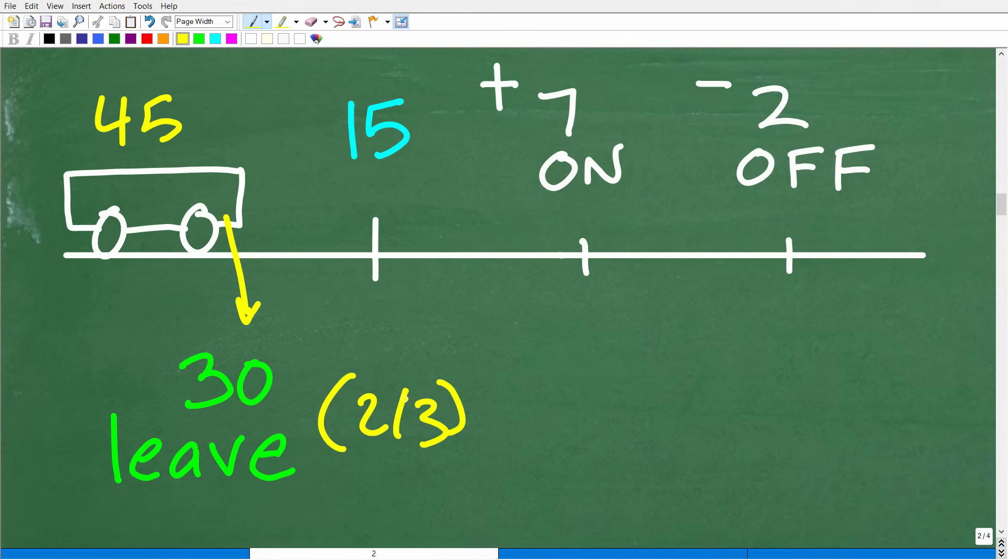So how many people are still on the bus after that event? Well, it would be 45 minus 30. And the last time I checked, that is 15. All right. So right now on our bus, we have 15 people, right? So we've got all these people off the bus.